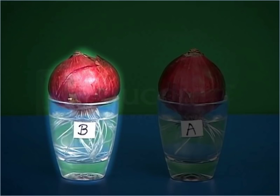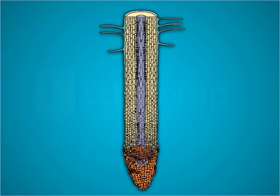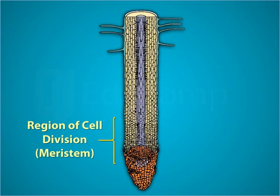In case of tumbler B, since the roots have not been cut, the root tip continues to grow longer. This root tip is a region of growth. The root tip consists of a tissue called meristematic tissue whose cells keep dividing and hence results in the growth of roots.